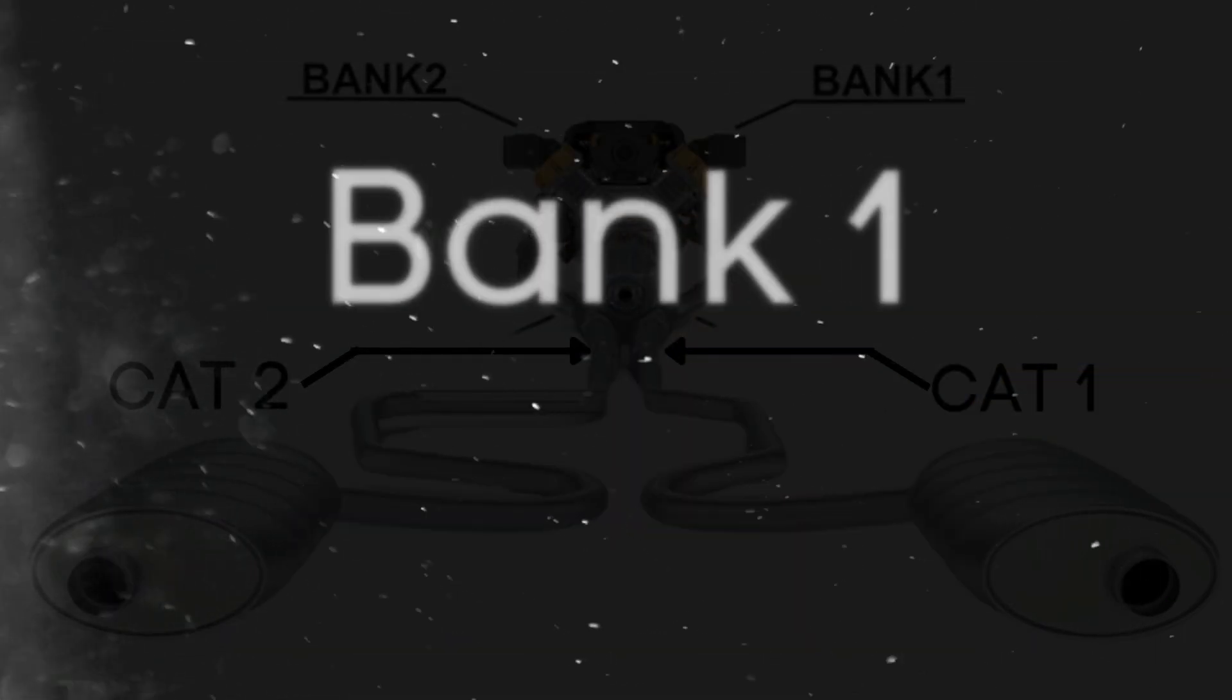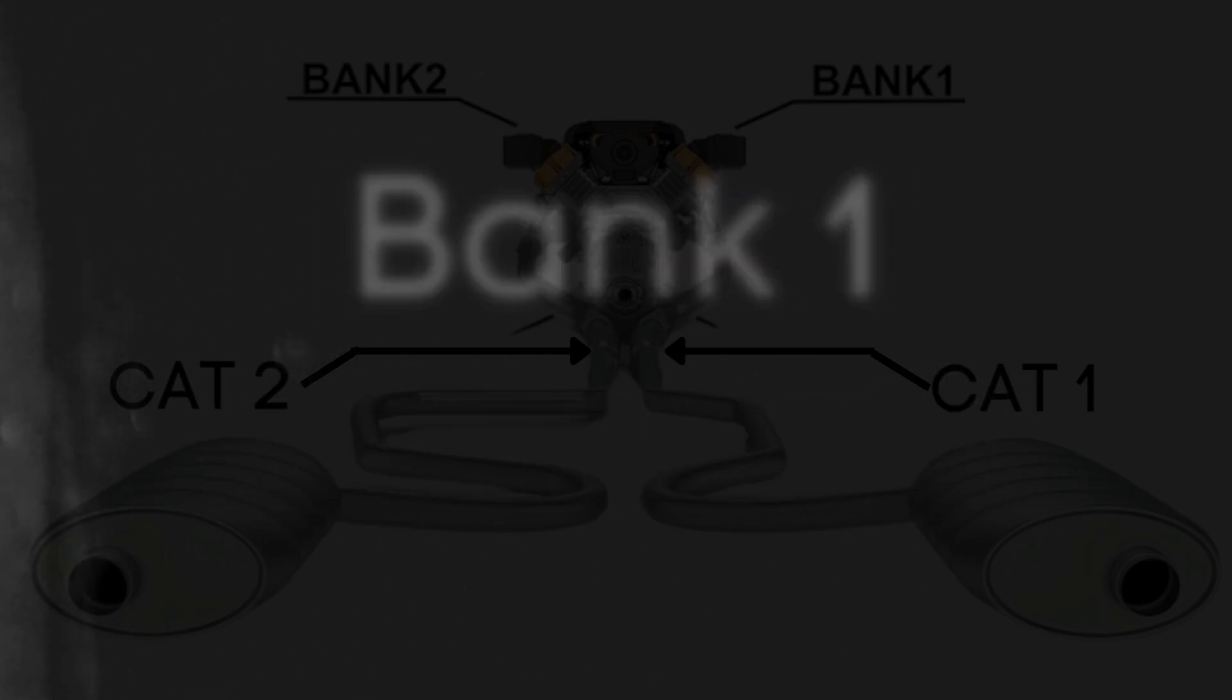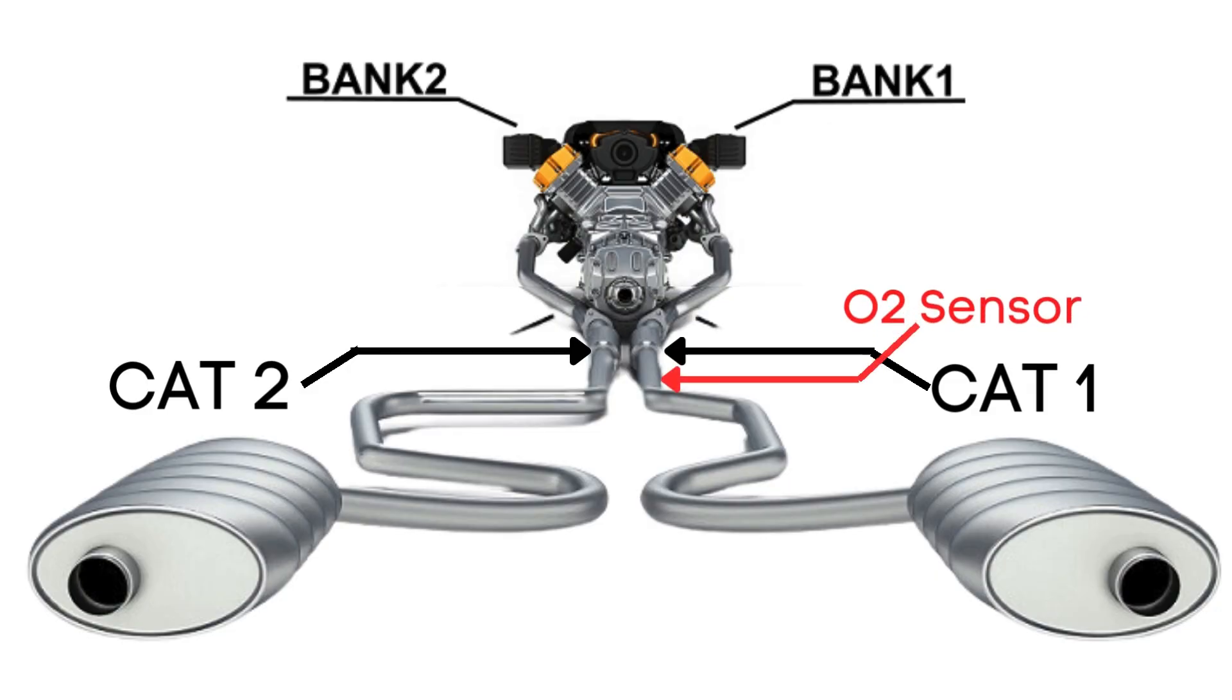So, when we talk about Bank 1, Sensor 2, we're focusing on the oxygen sensor that's downstream on the side of the engine where Cylinder 1 is located.